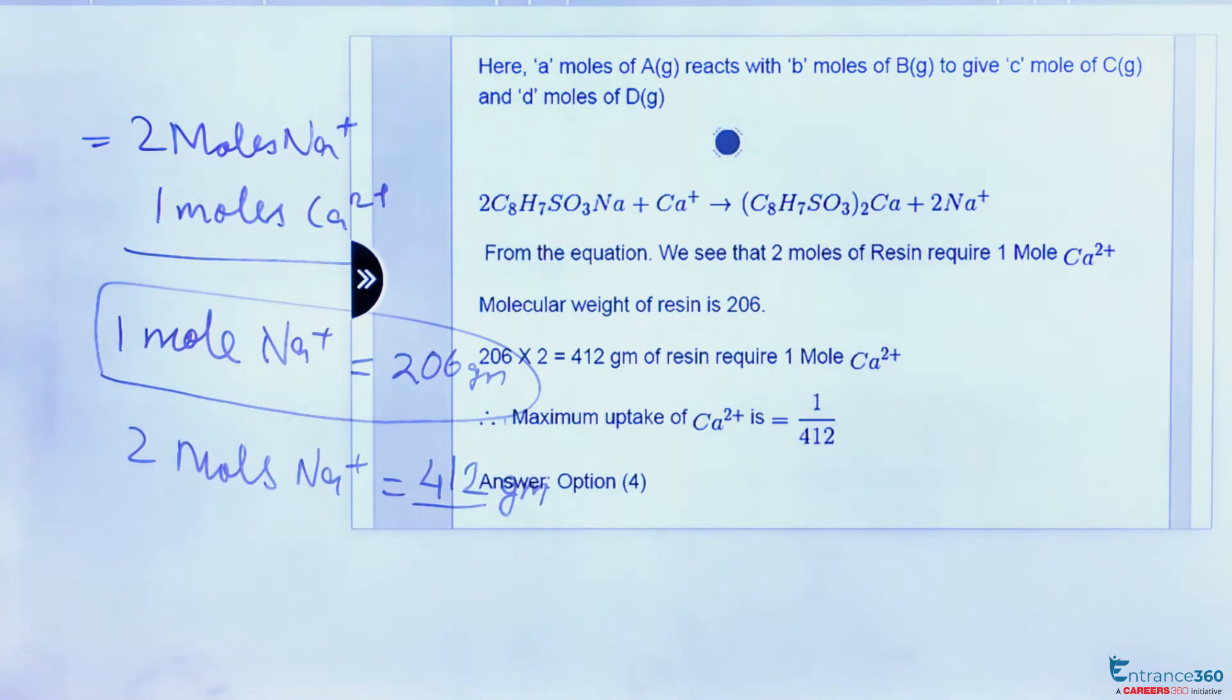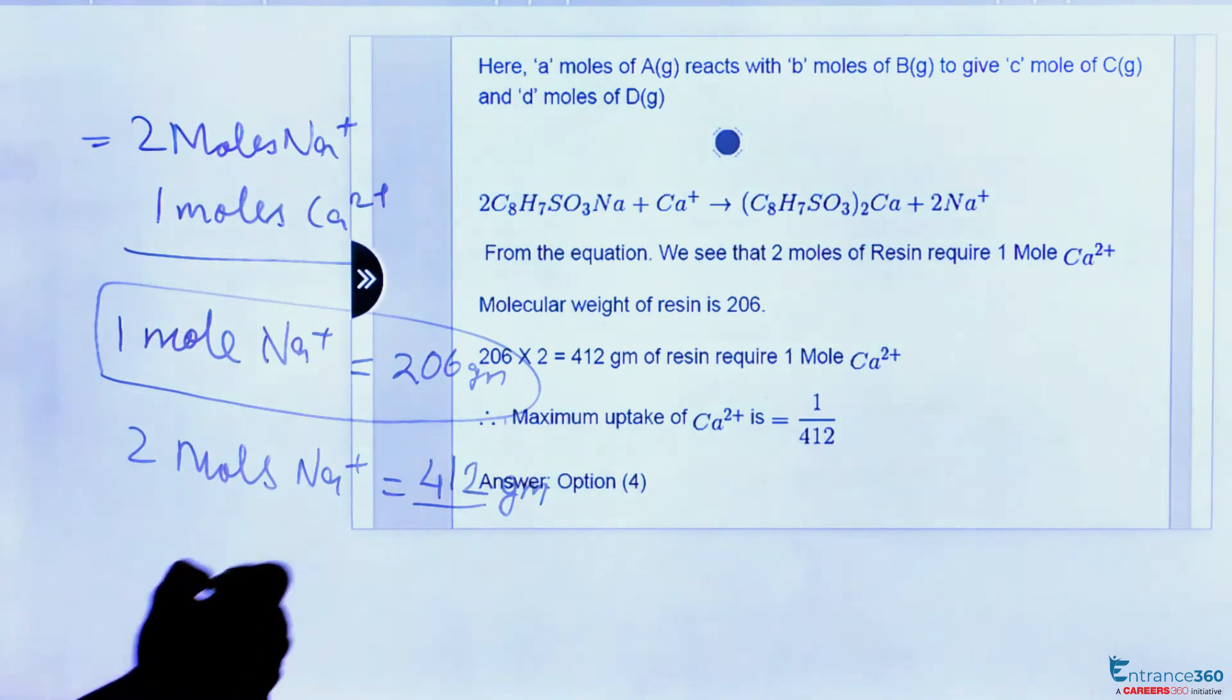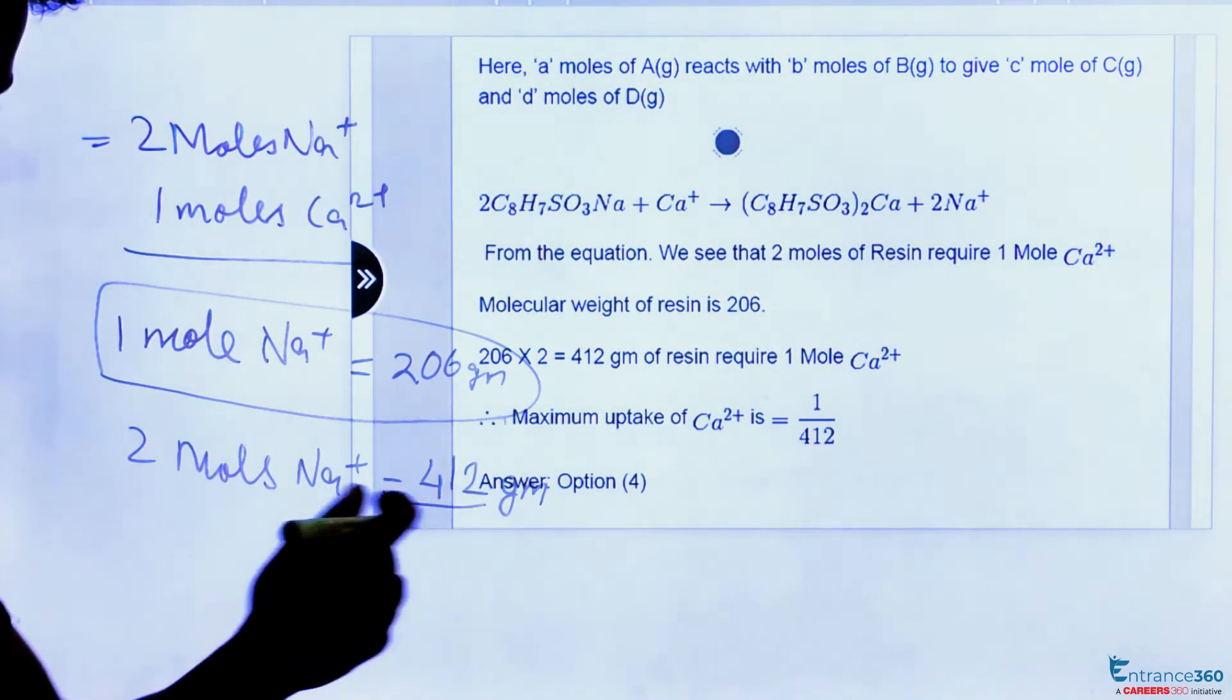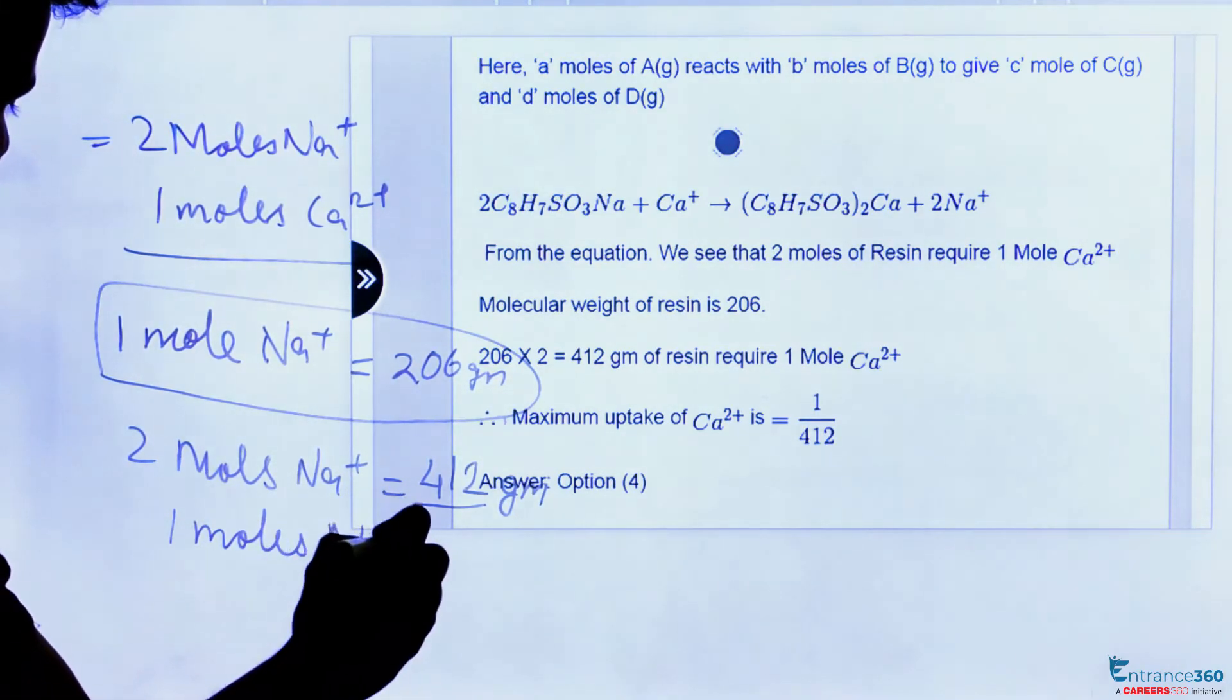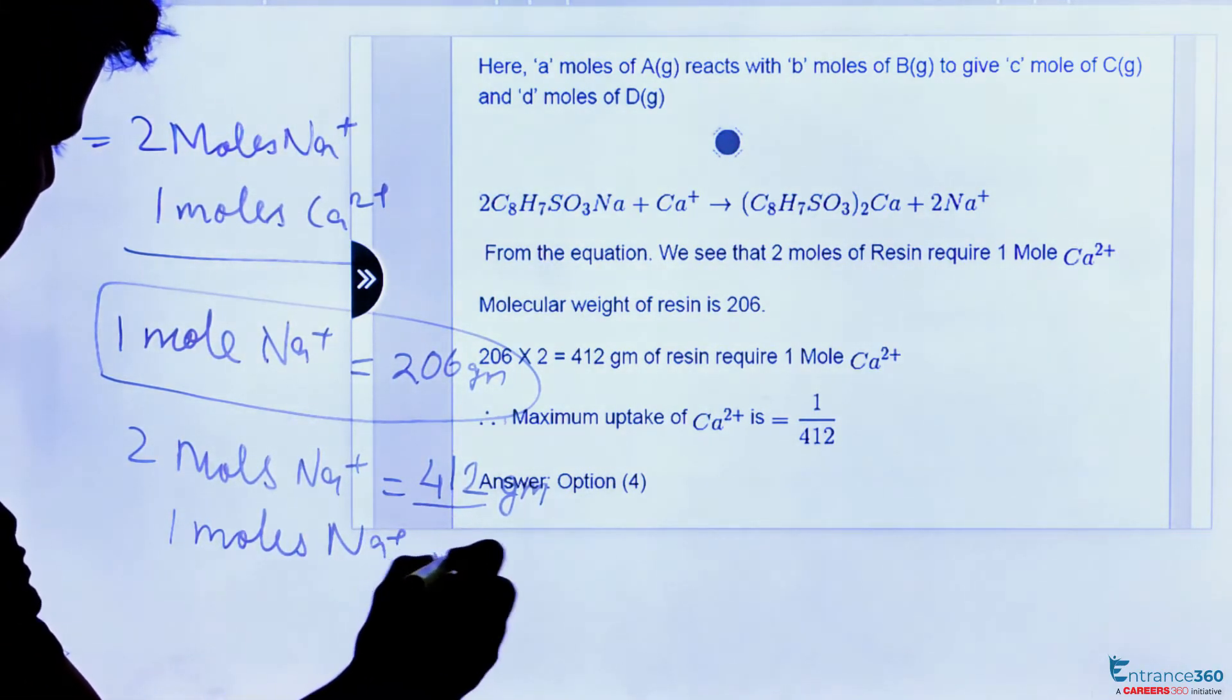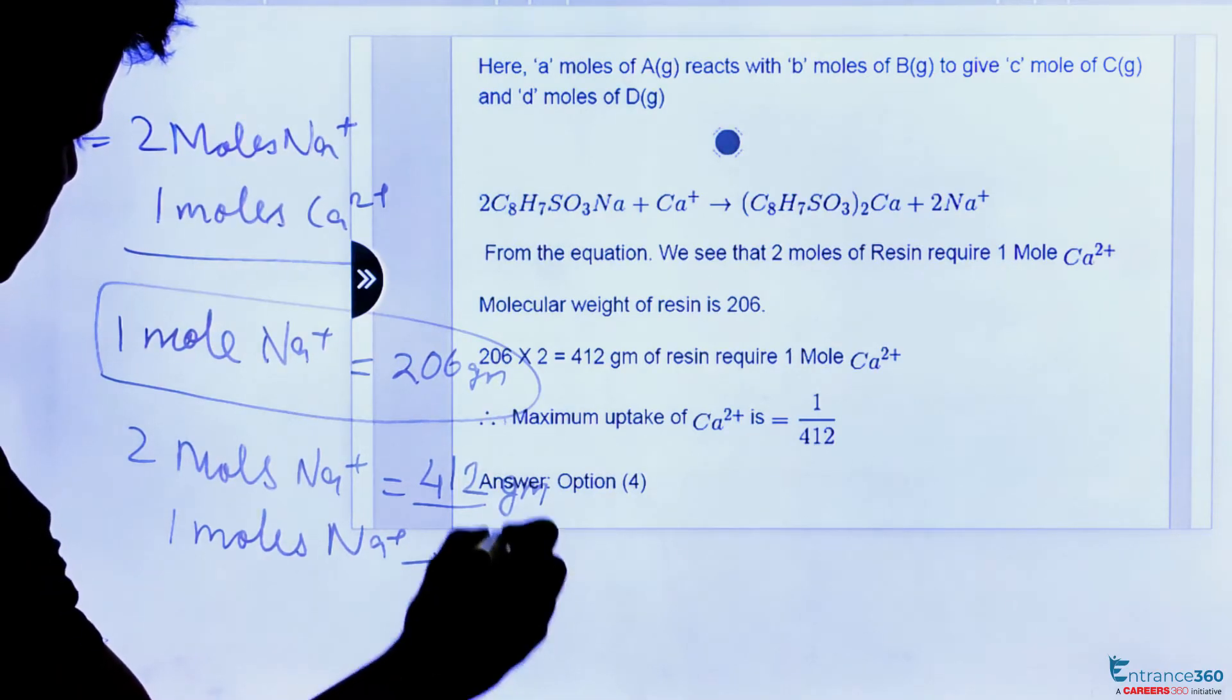The question asks: for one gram of resin, what would be the concentration of calcium ion? So we will calculate the calcium exchange for one gram of resin. As we know, one mole of Na+ will give 206 grams of resin.